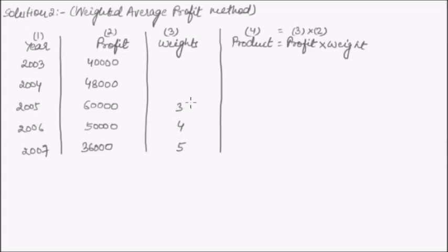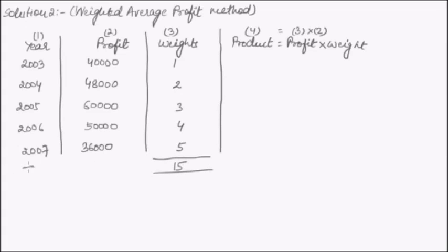We assign weight 4 to 2006, weight 3 to 2005, weight 2 to 2004, and weight 1 to 2003. The sum of all weights is 15. We then multiply profit by weight for each year to get the products: 40,000×1 = 40,000; 48,000×2 = 96,000; 60,000×3 = 1,80,000; 50,000×4 = 2,00,000; 36,000×5 = 1,80,000.